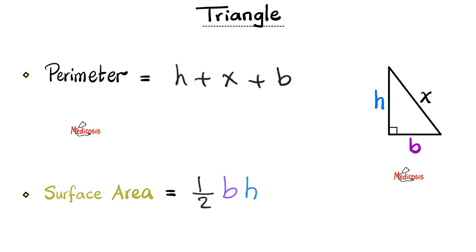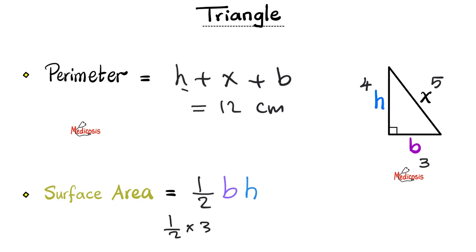Let's practice. Suppose that the base is 3, the height is 4, and the hypotenuse is 5. What is the perimeter? It is 4 plus 3 plus 5, or 12 centimeters. How about the surface area? Half of the base times the height: half multiplied by 3 multiplied by 4. Half of 4 is 2, times 3 is 6 centimeters squared — because when you multiply a centimeter by a centimeter, you get centimeters squared.